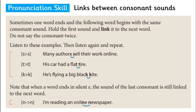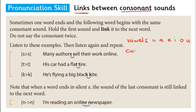We are looking at the pronunciation skill here, and this is about links between consonant sounds. What are consonant sounds? Let's start with vowels. You know that vowels are the five letters A, E, I, O, and U. And the consonants are the other 21 letters, so B, C, D, F for example. The sounds that these letters make are the consonant sounds.